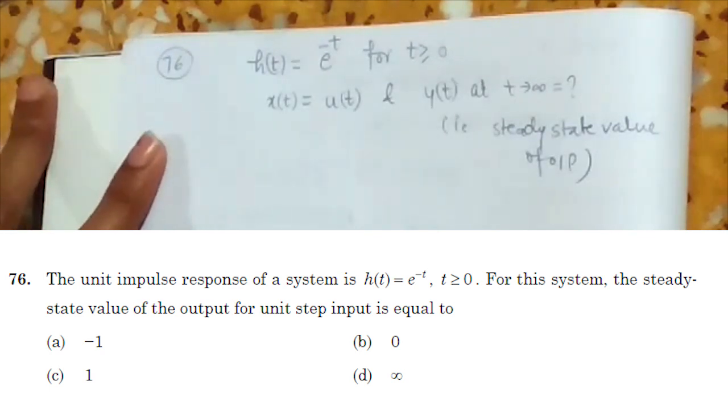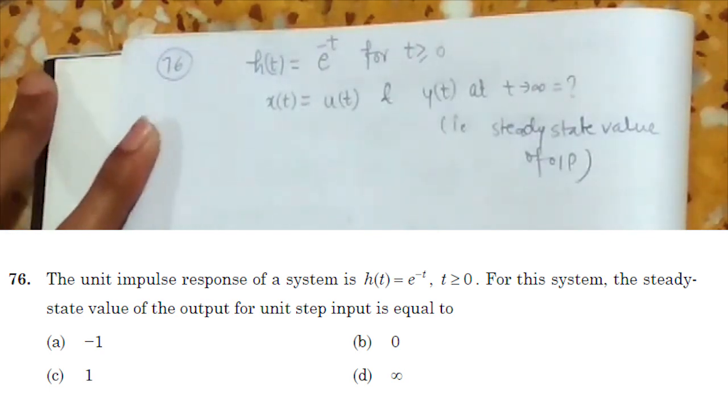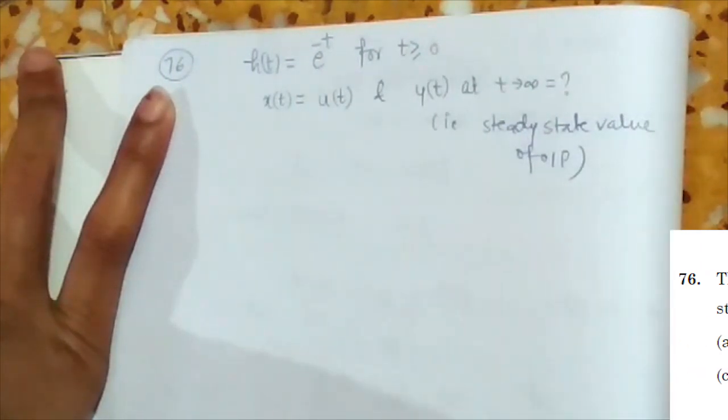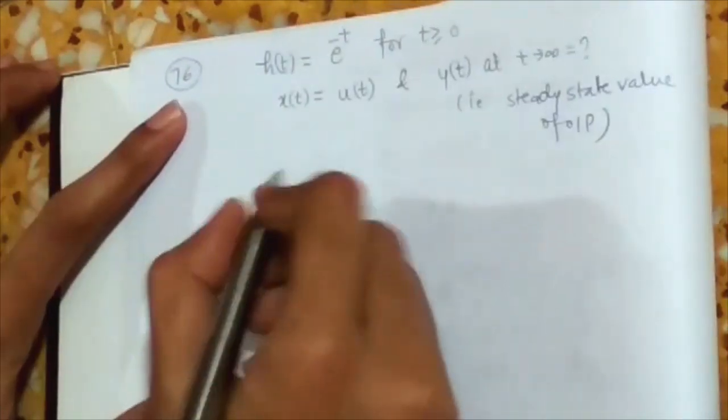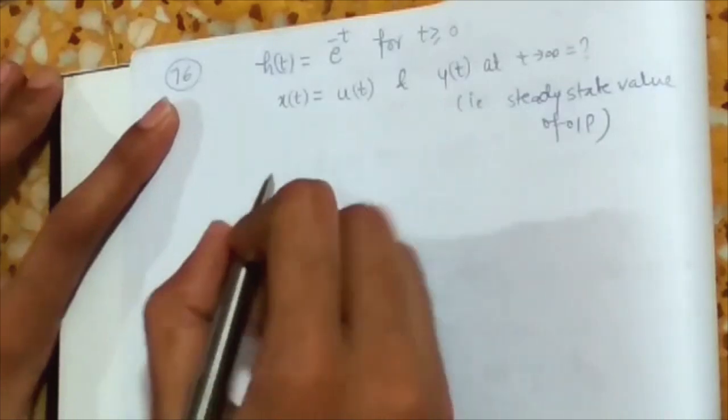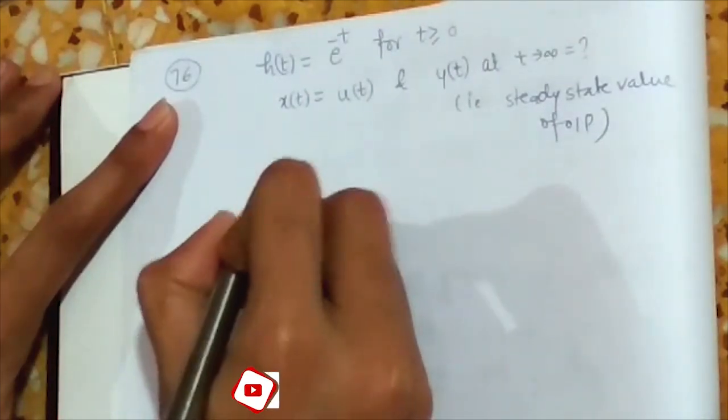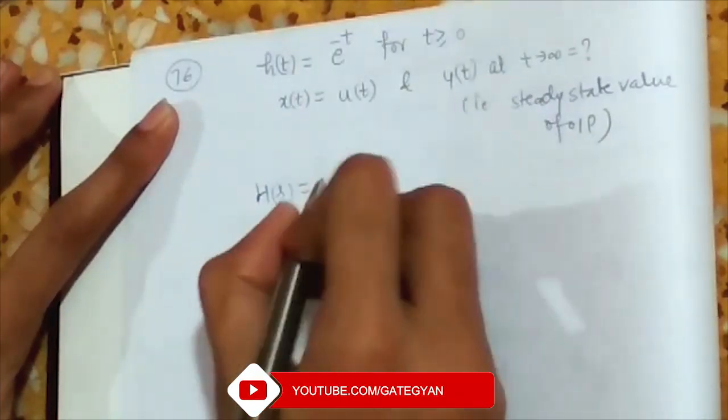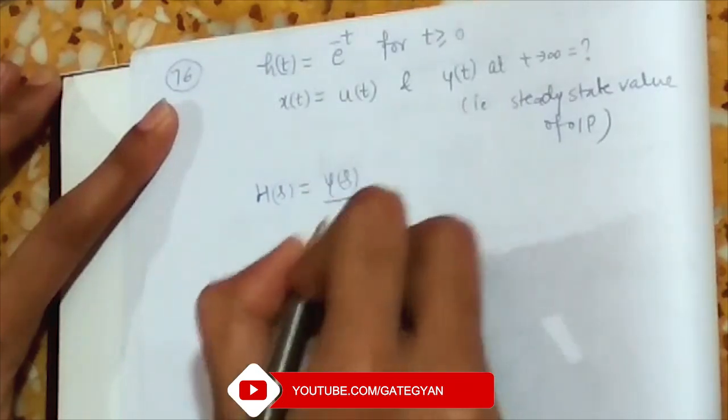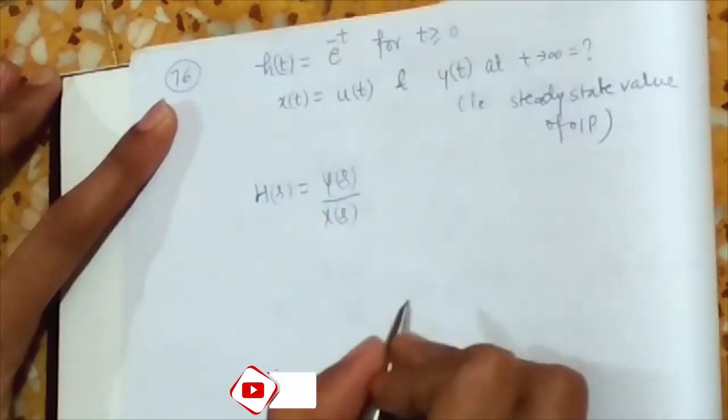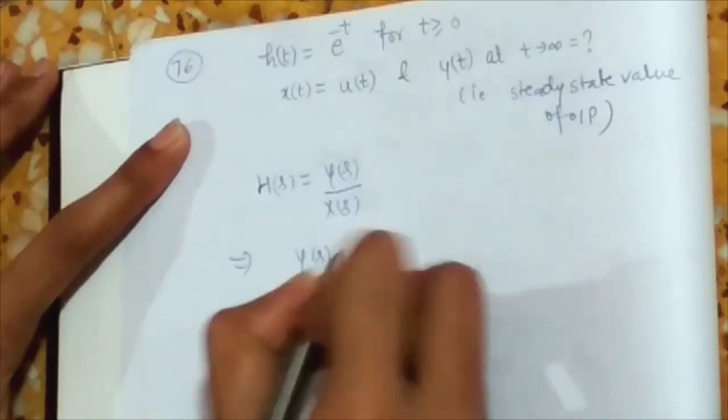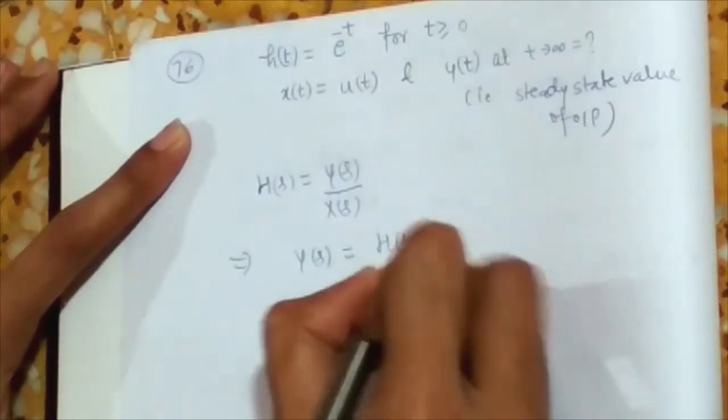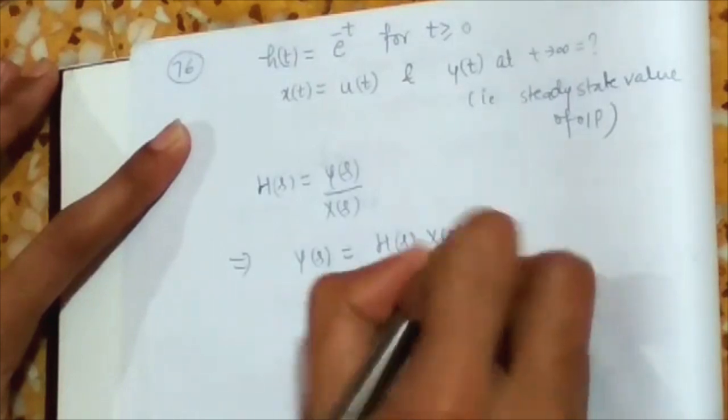So we can get our steady state value of output just by taking Laplace of this system as H(s) is given by Y(s) upon X(s). So to get Y(s) my expression will become H(s) into X(s).